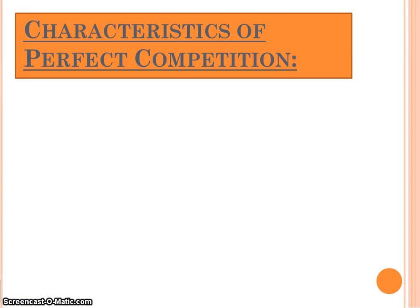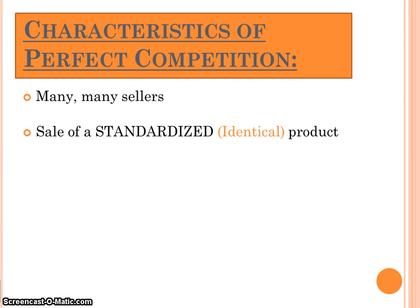We're going to talk about perfect competition in the short run today. The characteristics of perfect competition are that in these markets there are many, many sellers — so many that we can't even count them all. There's a whole bunch of people manufacturing this type of product, and the product they're manufacturing and selling is standardized, or identical to one another. This is oftentimes called a commodity product.